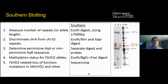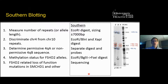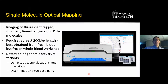Southern blotting achieves many of these components. We can measure the number of repeats, discriminate chromosome 4 from chromosome 10, determine the permissive 4QA and 4QB status, and look at methylation using a different set of restriction enzymes — EcoR1, BglII, and FseI, which is methylation sensitive. Following this up with sequencing of the SMCHD1 locus covers all five components. One disadvantage is the use of radioactivity. Another is that we can't always clearly discriminate gene rearrangements, and the method uses a lot of DNA with a slow turnaround time.